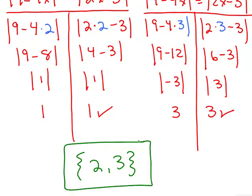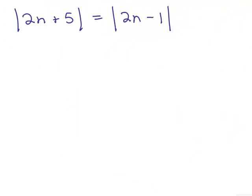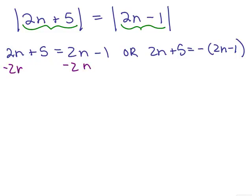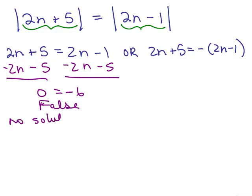Here's another example — solve for n: absolute value of 2n plus 5 equals absolute value of 2n minus 1. Either the two expressions are equal — 2n plus 5 equals 2n minus 1 — or they're opposites. Looking at the first equation: if we subtract 2n from both sides and subtract 5 from both sides, we get 0 equals negative 6, which is a false statement. So there's no solution from this case.